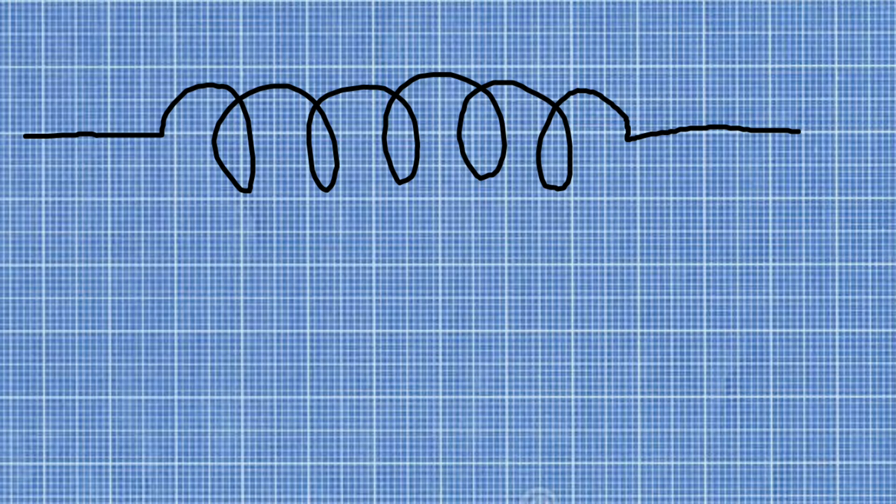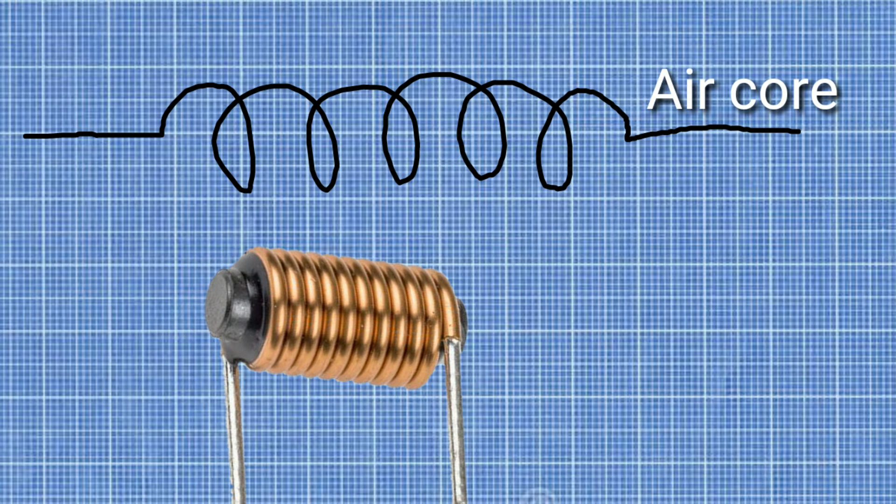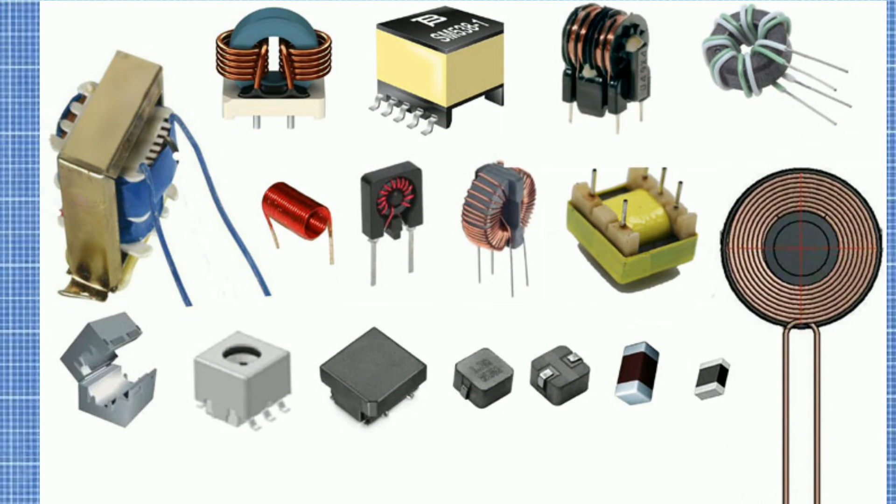The inductance value also depends on the core. If we just wound wire in air, this inductor is air core inductor. Some inductors are wound over ferromagnetic material. This type of inductor has bigger value than air core inductor because the magnetic field is higher in ferromagnetic material as compared to the air.